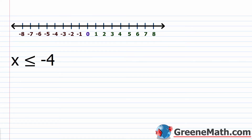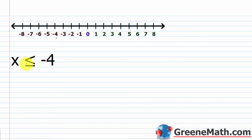What about x is less than or equal to negative 4? Find negative 4 on the number line. Since it's less than or equal to, we must include negative 4 as part of the solution. So place a filled-in circle or a bracket at negative 4 facing to the left, and shade everything to the left.